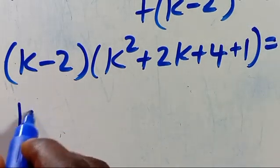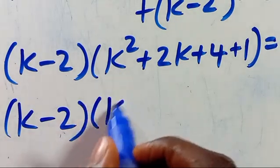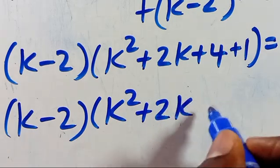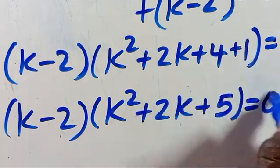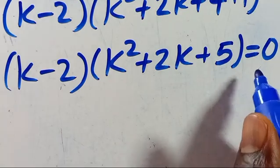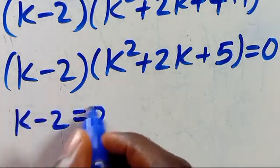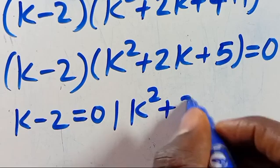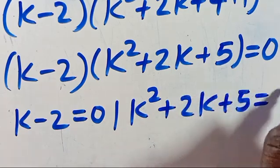So from here, we have k minus 2 in parenthesis, multiplied by k squared plus 2k, then plus 4 plus 1 gives us 5, then equals 0. Now, for this expression to equal 0, it's either we have k minus 2 equals 0, or we have k squared plus 2k plus 5 equals 0.